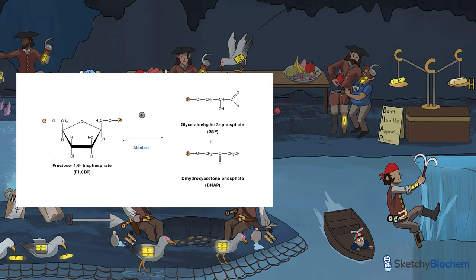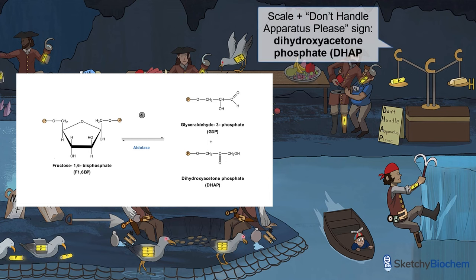If G3P is the poster child, dihydroxyacetone phosphate, or DHAP, is the not-poster-child. We're still depicting it here as a nice and useful treasure scale, and it looks just like DHAP. Do we just throw away poor DHAP? No, that's a waste of energy — we'll give it a makeover in step 5.